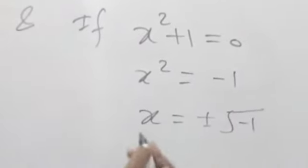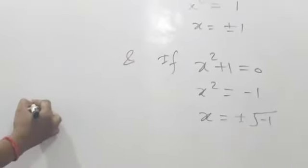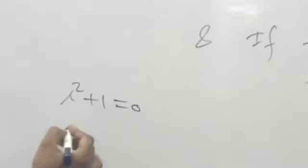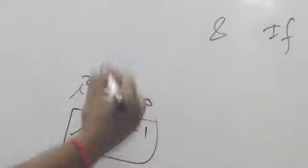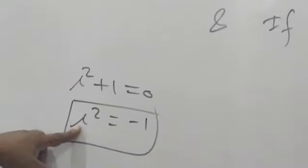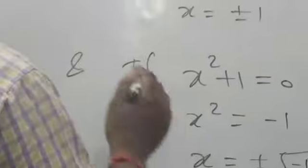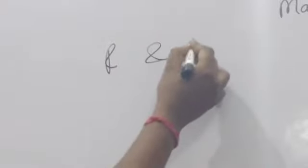Now, if about the complex number, suppose i² + 1 = 0, then i² = -1. Here, i is the imaginary part. We have two parts: first one is real number and second one is imaginary number.